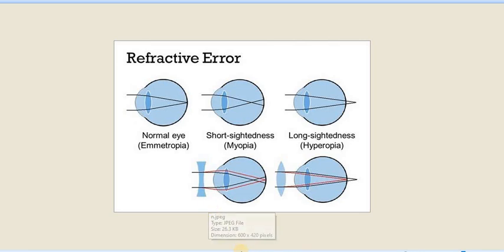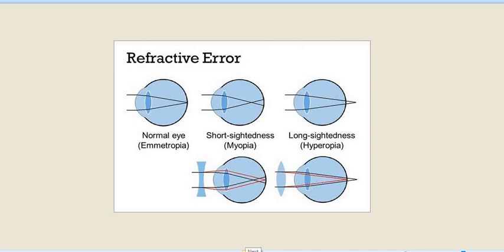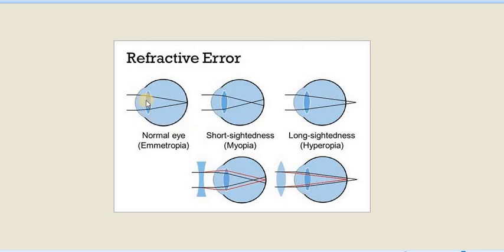There are other refractive errors also. In astigmatism, the curvature of the cornea is unequal. Another is presbyopia, where after age 40 or 42 the flexibility of the lens is reduced and accommodation is not proper; near vision is affected and the person needs reading glasses. Applied physiology of the eyeball includes glaucoma — increased pressure over the anterior part of the eyeball — and cataract, where the crystalline lens becomes deposited with opacities.